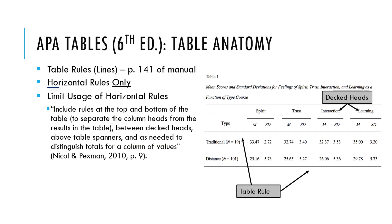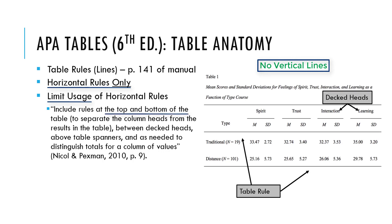APA-formatted tables only contain horizontal lines, called rules, in order to maintain cleanliness. Notice that no vertical lines appear within the table. Rules should only appear when necessary for clarity — at the top and bottom of the table, to separate the column heads from the rest of the table, between decked heads, above table spanners, and as needed to distinguish totals for a column of values.